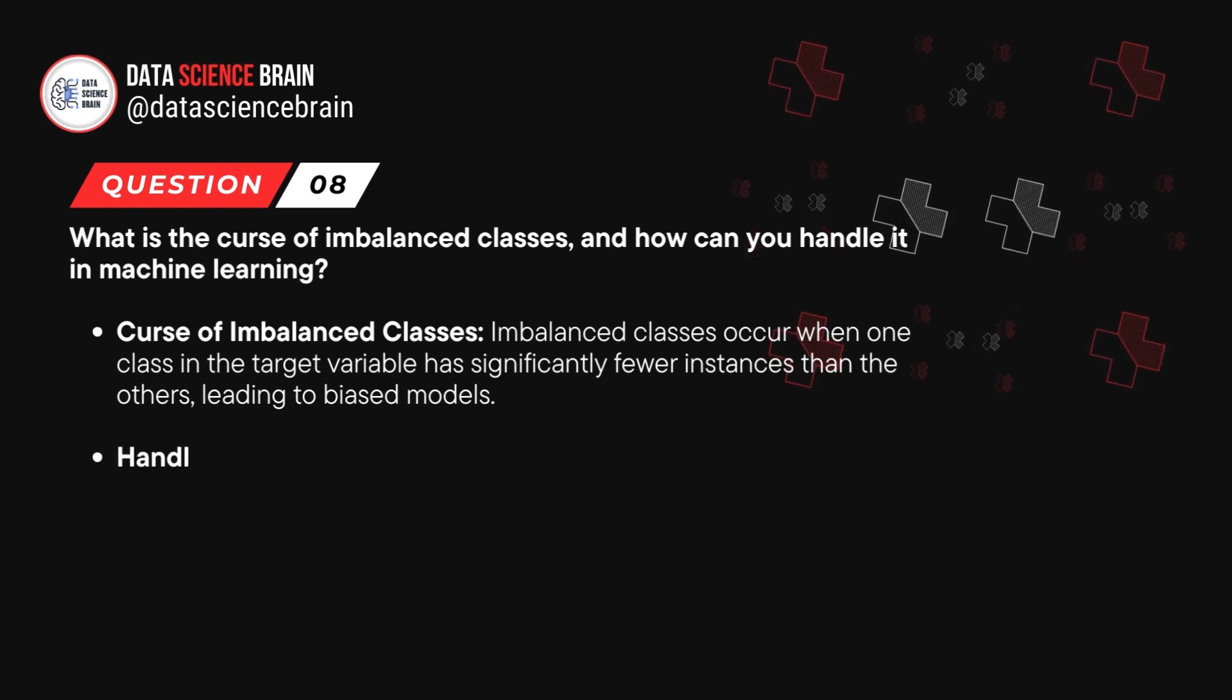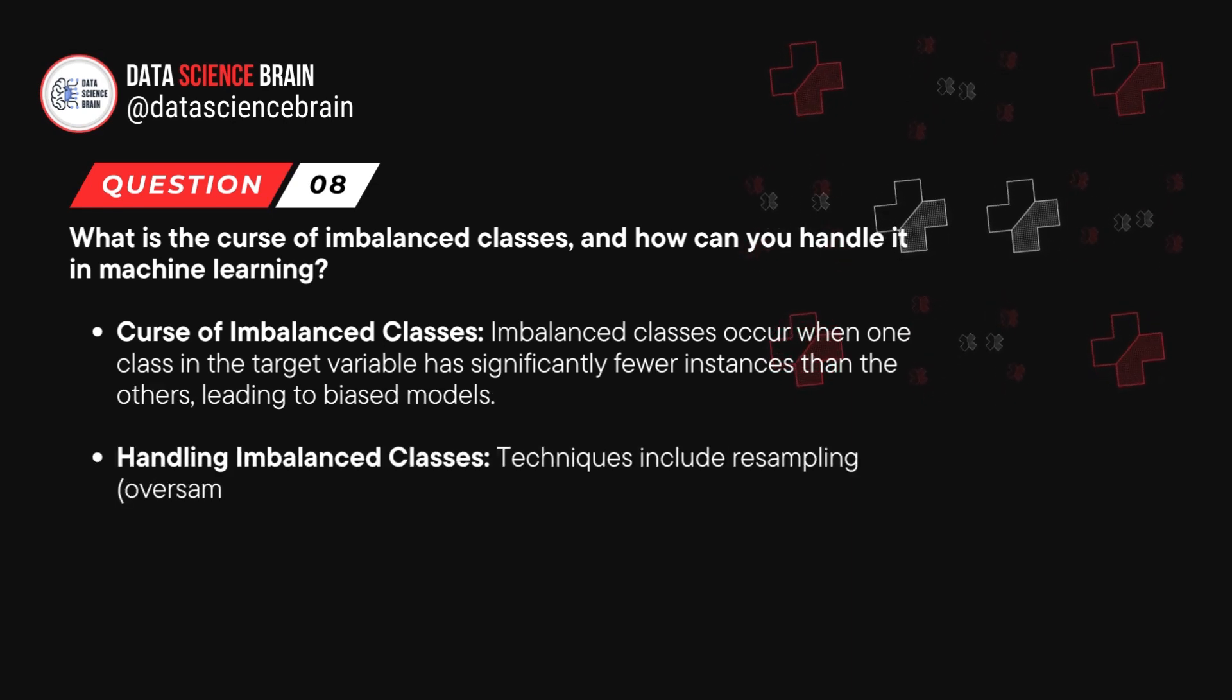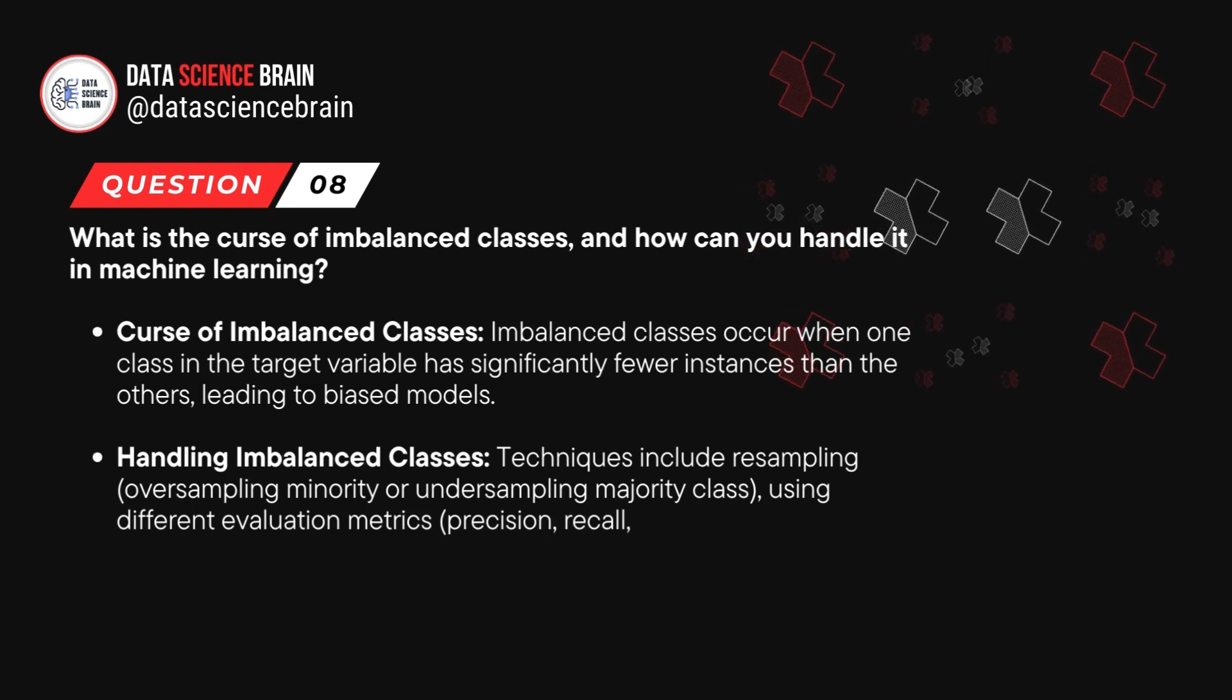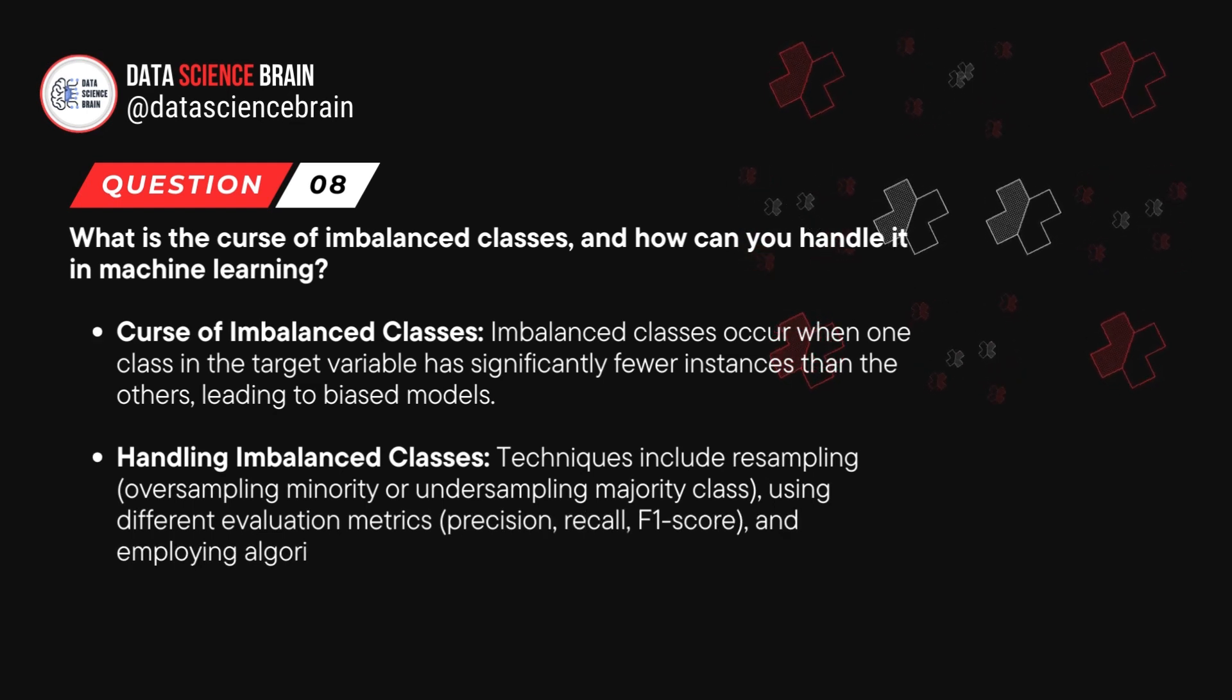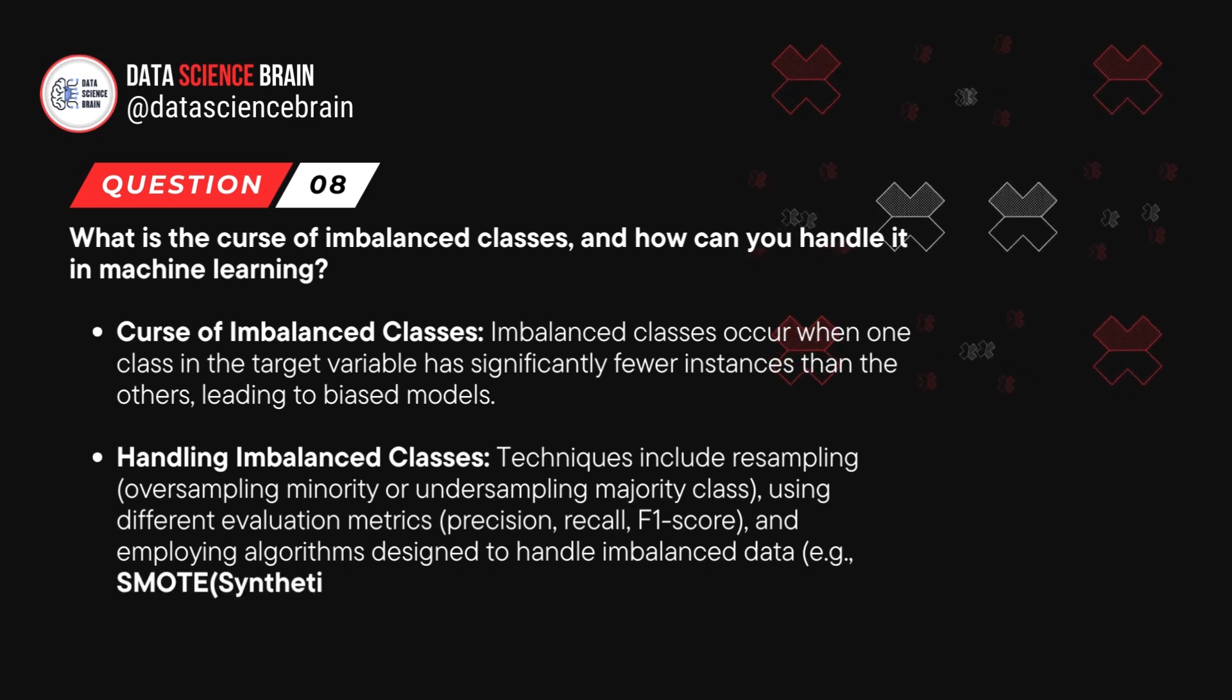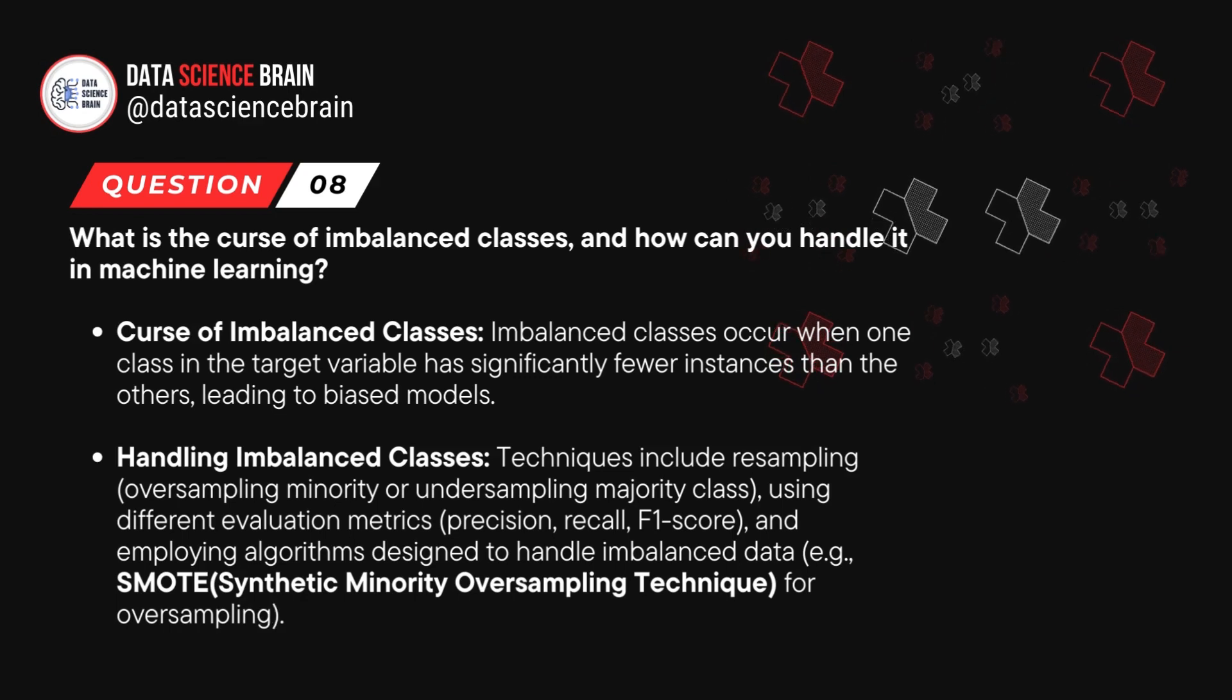Now how can we handle imbalanced classes? Techniques include resampling, which is oversampling minority classes, using different evaluation metrics like precision, recall, or F1 score, and employing algorithms designed to handle imbalanced data. Example: SMOTE for oversampling, which is Synthetic Minority Oversampling Technique.